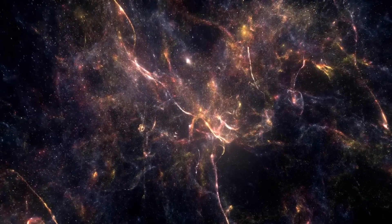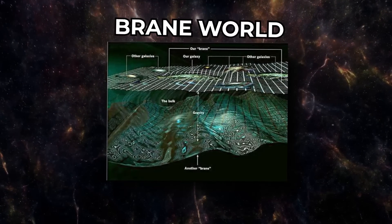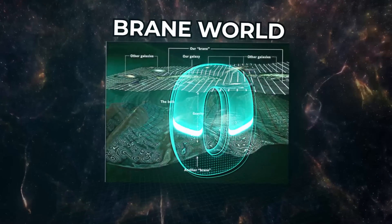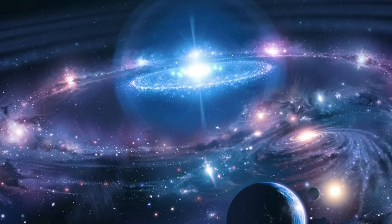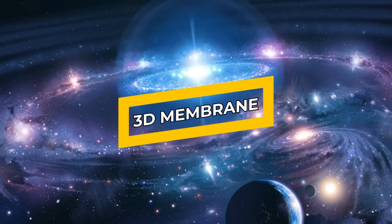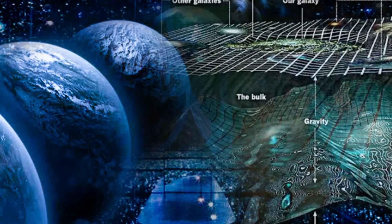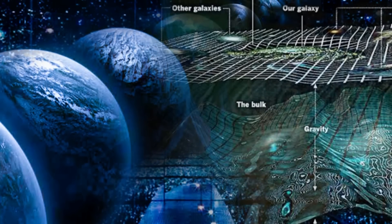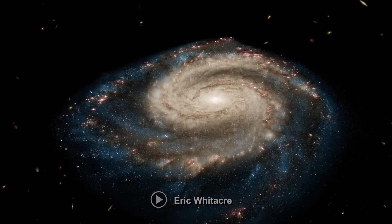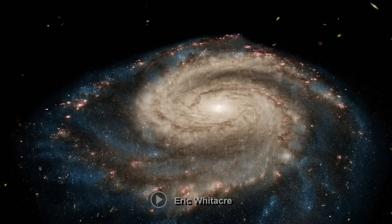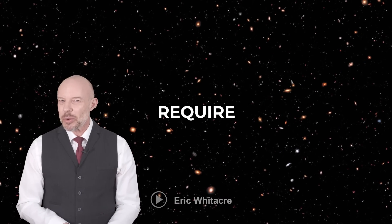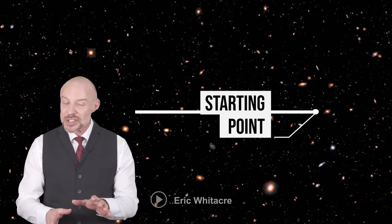The first is called Brane World. Now, in Brane World theory, there isn't an explicit concept of zero or nothingness. Instead, the theory proposes that our observable universe is a three-dimensional membrane, or brane, that's embedded in a higher-dimensional space known as the bulk. The bulk contains additional branes, and interactions between the branes could have led to the creation of our universe. The Brane World theory doesn't necessarily require a specific starting point, or a concept of absolute nothingness, because it's based on the idea that our observable universe is just one part of a larger, multi-dimensional reality.